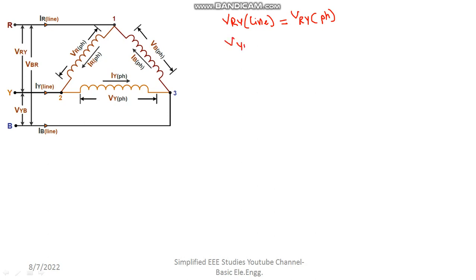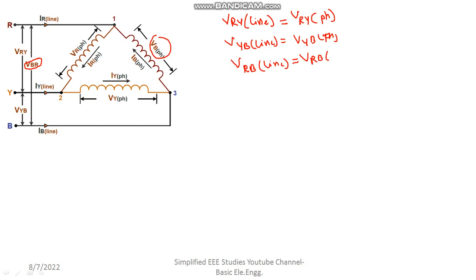Likewise, V_YB line is equal to V_YB phase. One more is remaining: V_RB line is equal to V_RB phase. So in the case of a delta connected system, it is concluded that the line voltage will always be equal to the phase voltage — both are identical. Make a note of this everybody: in a delta connected system, line voltage is equal to phase voltage. It is very clear from the diagram.